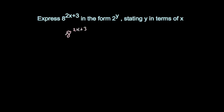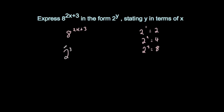From our previous working, 2 to the power of 1 is 2, 2 squared is 4, 2 cubed is 8. So instead of writing 8 we could write 2 cubed, all to the power of 2x plus 3. What we've done is written 8 as 2 cubed in brackets.